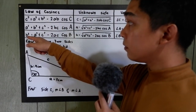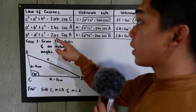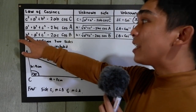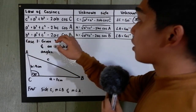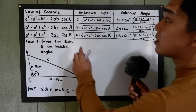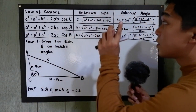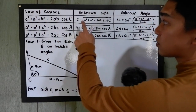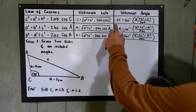The same case in finding side a and b. If we are going to find side a, the given must be side b, side c, and angle A. And b squared is equal to a squared plus c squared minus 2ac cosine B. If we are looking for side b, side a and c must be given, and of course angle B. To get our side, just extract the square root. So c is equal to the square root of a squared plus b squared minus 2ab cosine C.